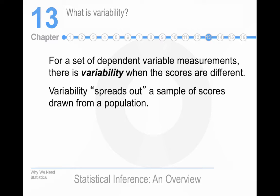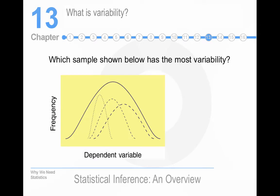But it's easiest to think of variability as the spread of scores around some average. So, which of those samples has the most variability? Well, the one with the largest possible range of scores.